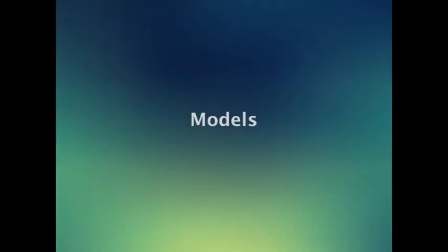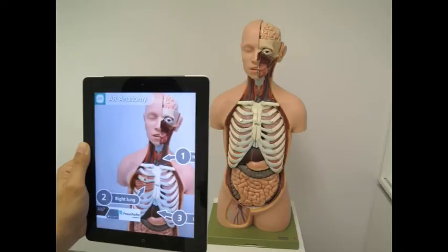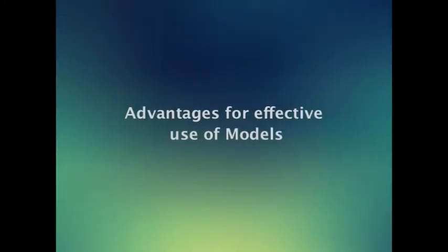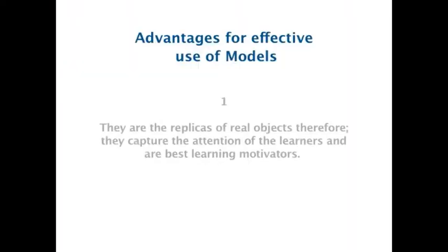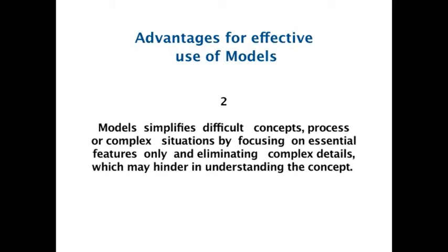The next teaching aid is Model. Models are non-projected, three-dimensional visual aids with recognizable imitation of real things or abstract concepts. Usually a model is similar to the original object in every aspect except the size; the size of an object may be reduced or enlarged. The advantages are: 1. They are replicas of real objects, therefore they capture the attention of learners and are best learning motivators. 2. A model simplifies difficult concepts, processes, or complex situations by focusing on essential features only and eliminating complex details which may hinder understanding.